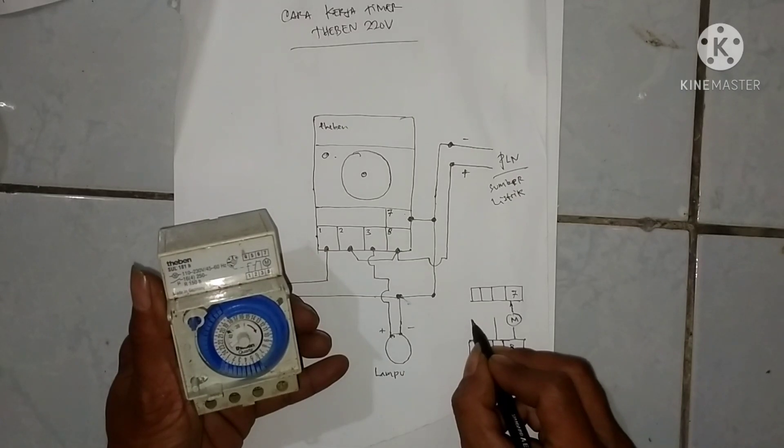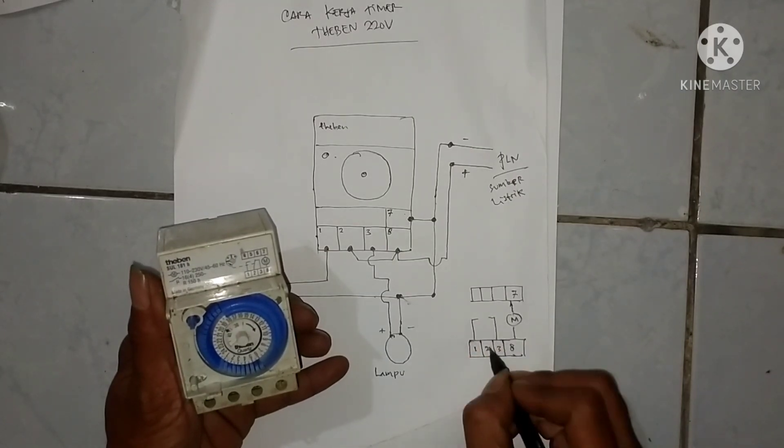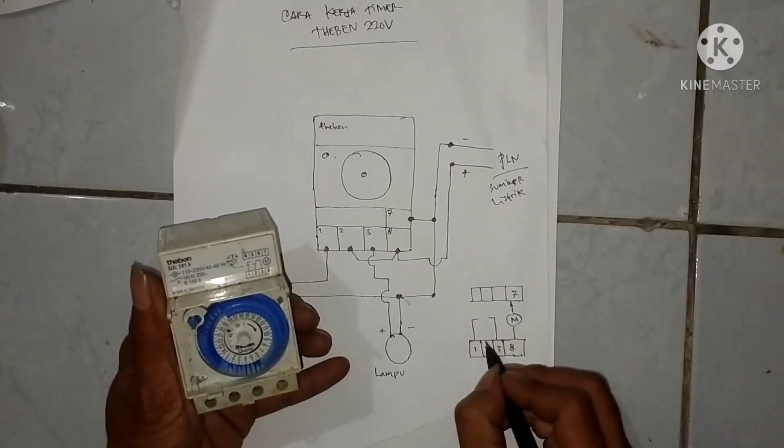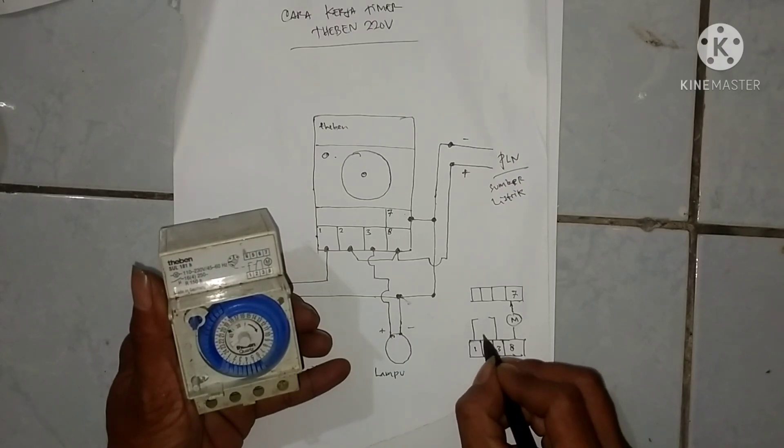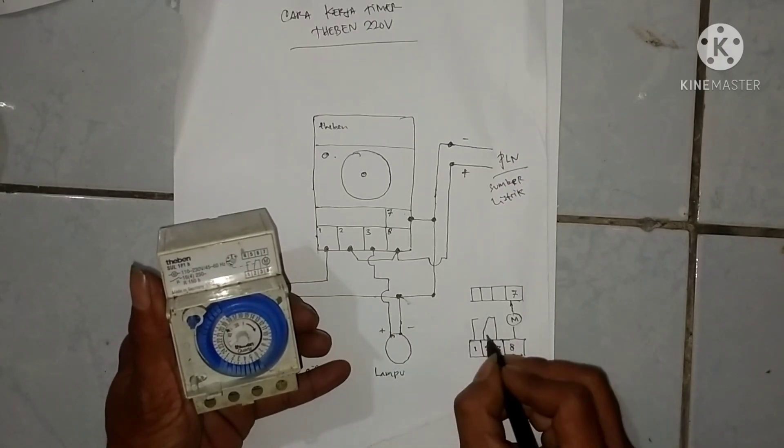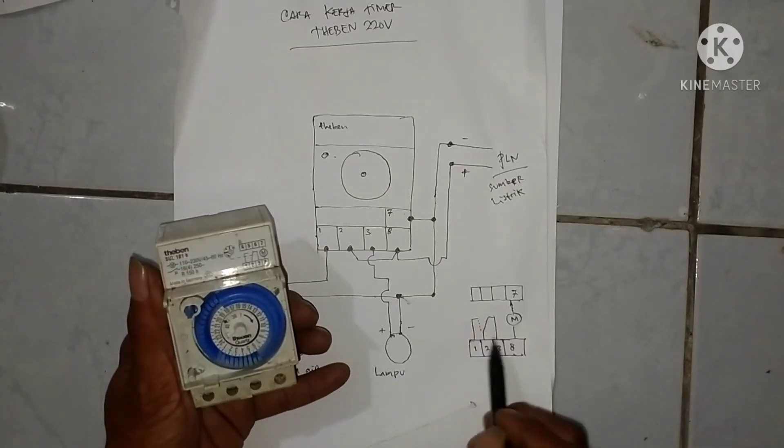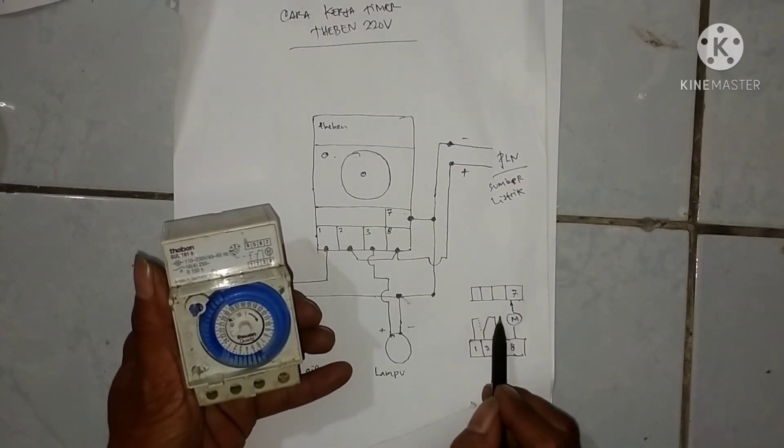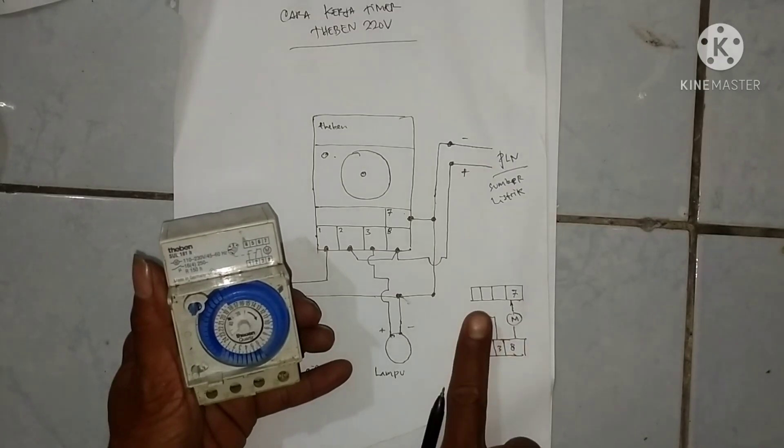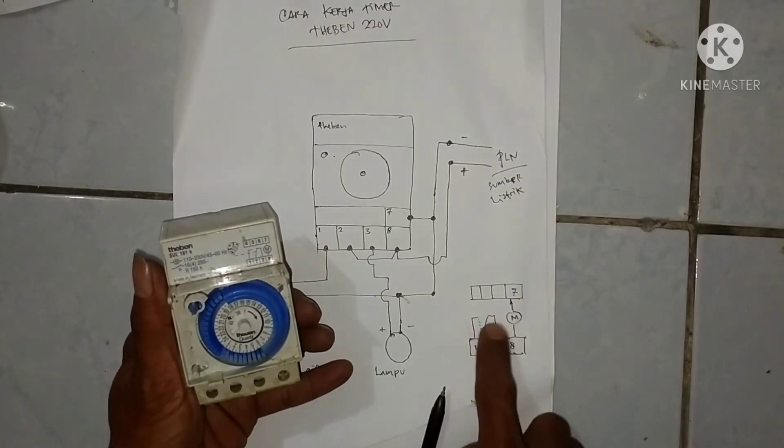Nah si antara yang 1 sama 3 itu dapat stroom dari 2 bergantian. Nah itu gambar platina, bisa yang 2 itu bisa terhubung ke angka 3 atau ke angka 1, nah seperti itu.